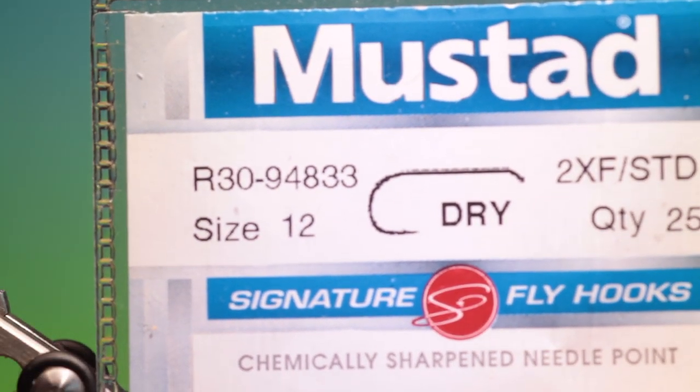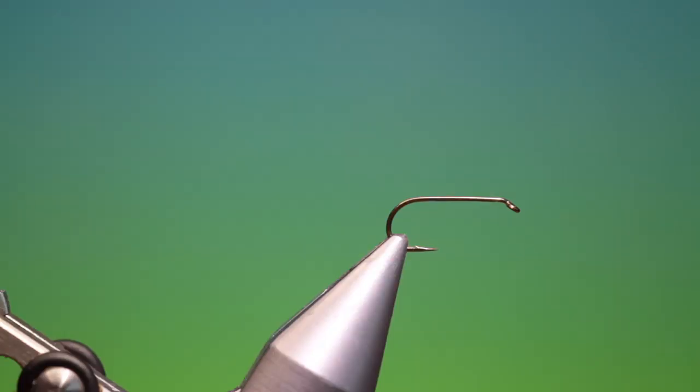OK we'll start with the Mustard R30 size 12 dry fly hook. We've got shear, 40 knot, olive. This is the braided damsel.